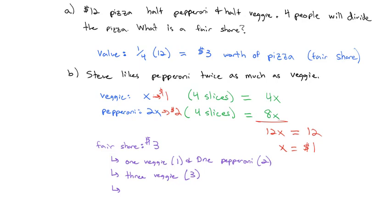Or maybe Steve wants partial slices. Maybe he wants all pepperoni, so he's going to do one and a half slices of pepperoni. Because one slice of pizza is $2, the half a slice is $1. So that's $3 worth of pepperoni pizza. And so you see there's many different ways we can slice a fair share for Steve, given that he likes the pepperoni twice as much as the veggie.